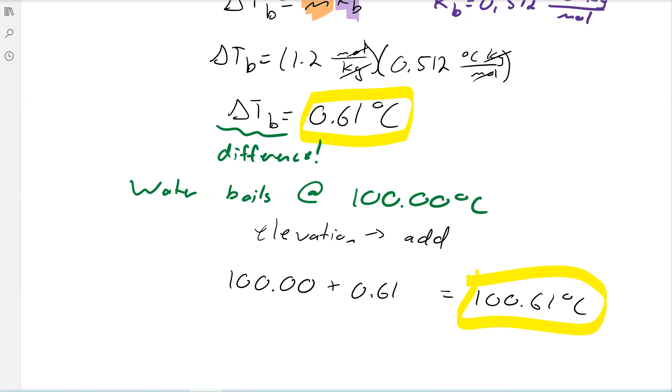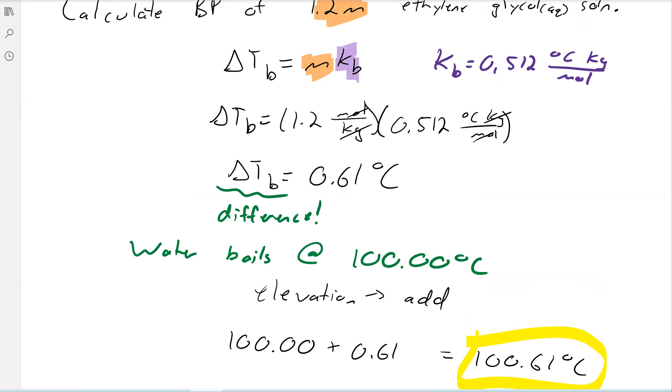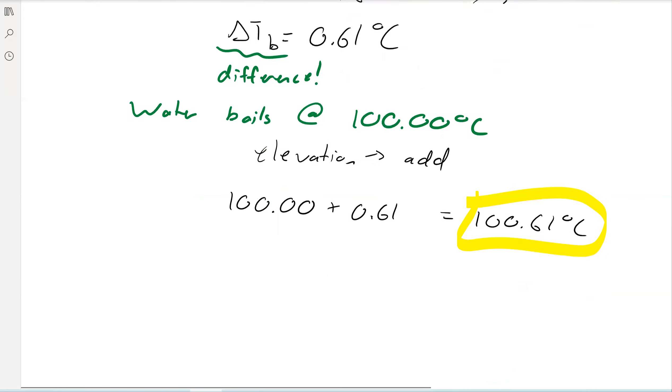Again, this is boiling point elevation. So your solution should boil at a higher temperature than the pure compound. And again, these are just plug and chug type of problems. You know, just get used to them, do some practice, and you should be okay.